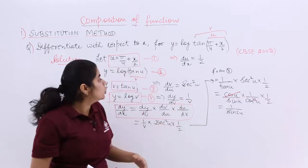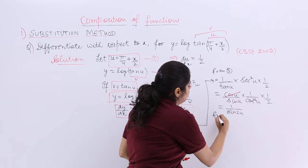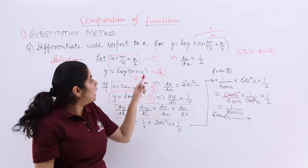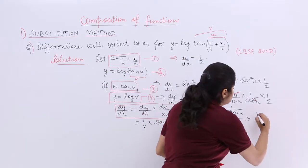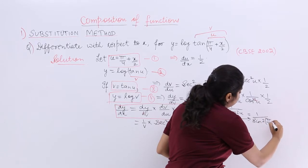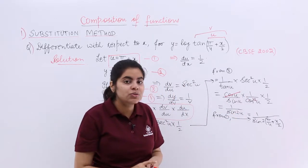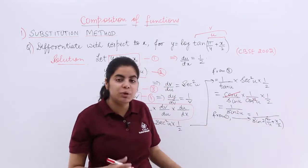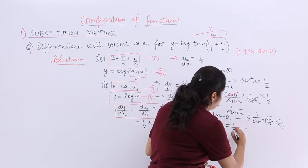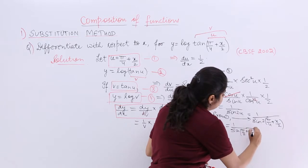Now what is u? u from the equation 1. So I write from 1. I say that from 1 it becomes pi by 4 plus x by 2. So 1 by sin 2 multiply by pi by 4 plus x by 2. Now what is the answer to this? You see that 2 is multiplied with pi by 4. It becomes pi by 2 and 2 and 2 gets cancelled. So it is 1 upon sin pi by 2 plus x.